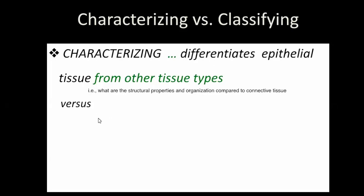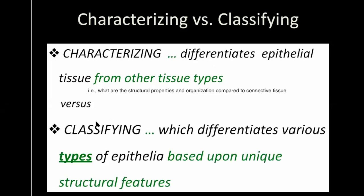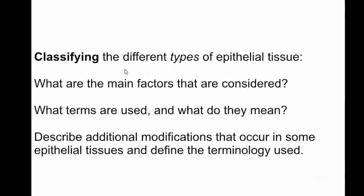We're going to look at epithelial tissue and break it down into eight different types along with some of their structural features that you'll be asked to identify. This is the kind of thing you'll be doing both conceptually in lecture and for histology purposes when you're trying to identify epithelial tissue. So here we're going to classify the different types of epithelial, look at the terminology, and discuss some of the additional modifications.